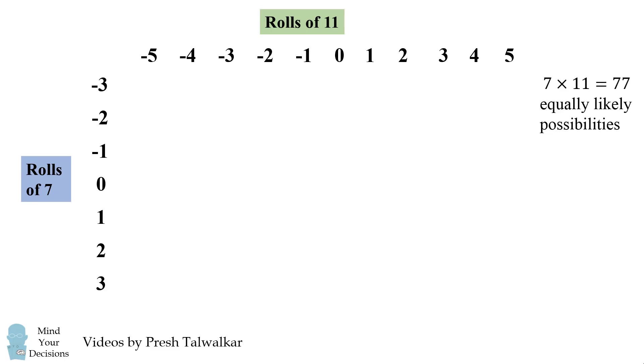We'll get started by writing the sample space. The seven-sided dice could show any of the following seven numbers. The 11-sided dice can show any of the following 11 numbers, and these will be with equal chance. So we have a total of seven times 11, which equals 77 equally likely possibilities.